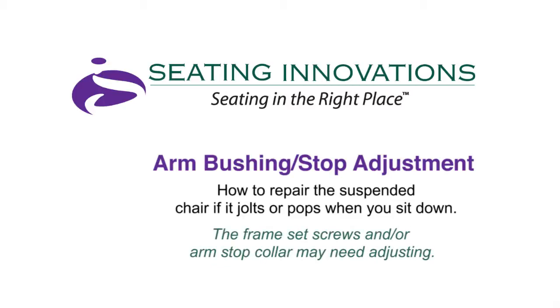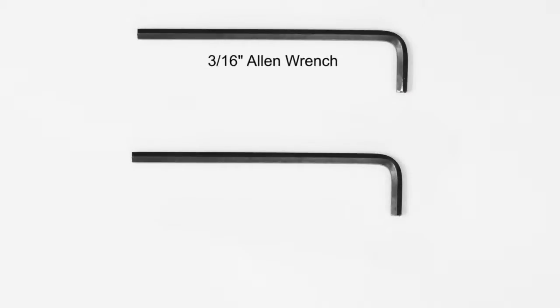If the chair jolts or pops, the frame set screws and or arm stop collar may need adjusting. To repair this you will need a 3/16th Allen wrench and a 5/32nd Allen wrench.